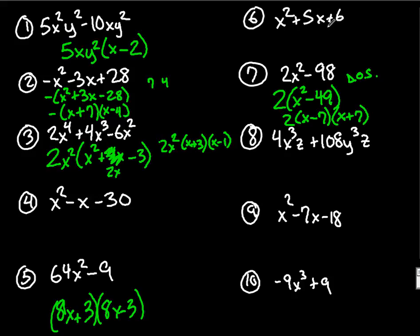Number 4 and number 6 and number 9 as well are all regular factoring of polynomials. What multiplies to 30 subtracts to 1. That would be 6 and 5. So 6, 5, bigger number gets the sign in front, which is negative. Negative times a positive gives you a negative.